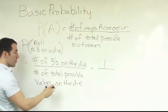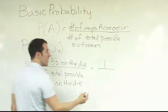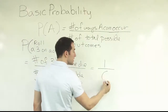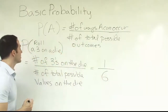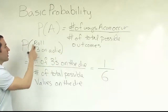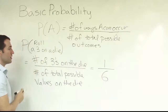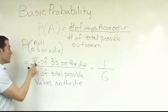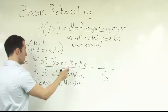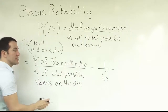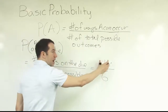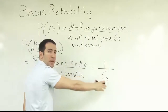So our fraction becomes one over six — because there's only one three on the die, and there are six numbers possible on the die. Once you set up the structure, the problem becomes pretty easy.